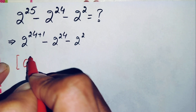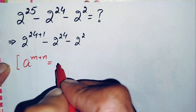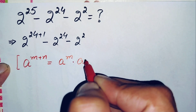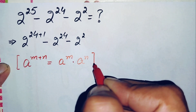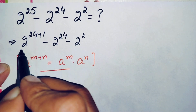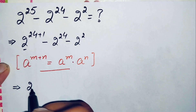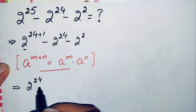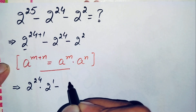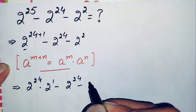The exponential property is: r raised to power m plus n can also be written as r raised to power m times r raised to power n. By using this exponential math property, the term becomes 2 raised to power 24 times 2 raised to power 1, minus 2 raised to power 24, minus 2 squared, which is 4.